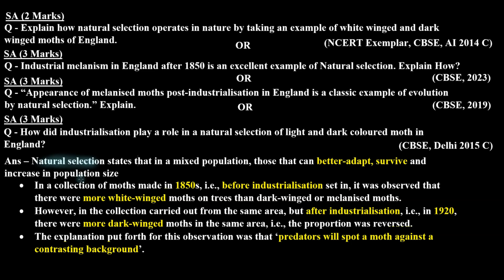Because of the white lichen, the bark of the trees appeared white. Any predator can only recognize a moth against a contrasting background — if a dark moth is on a light background, it is easily spotted; if a light moth is on a light background, it cannot be seen. So before industrialization, predators could not recognize the light-colored moths.